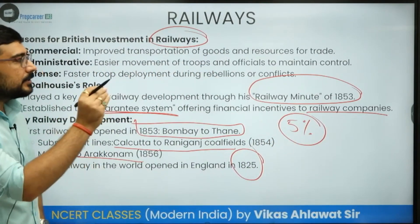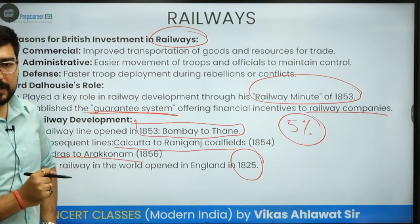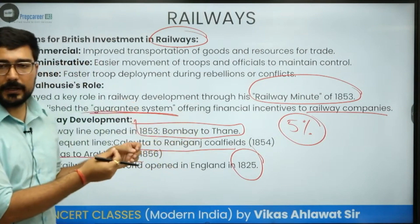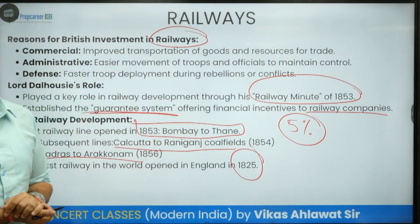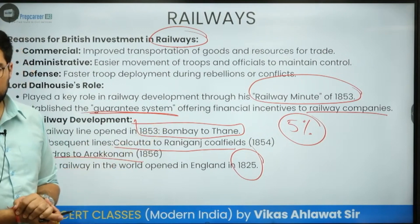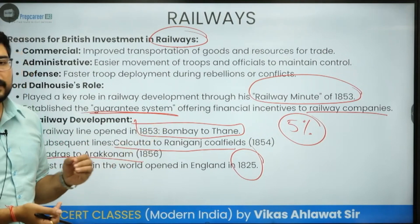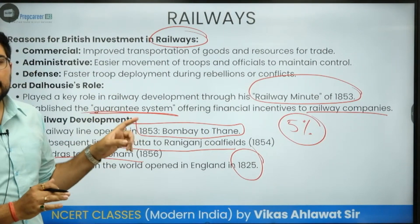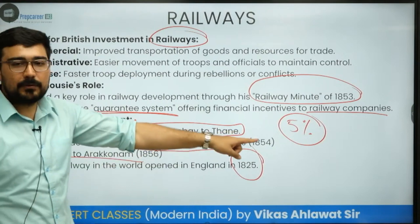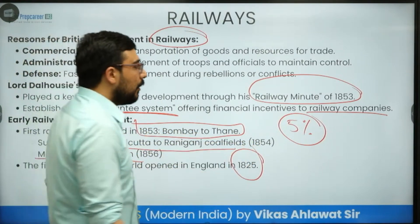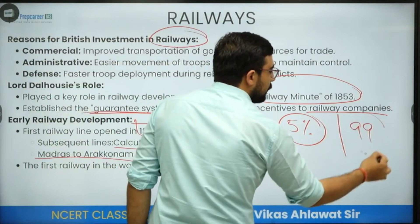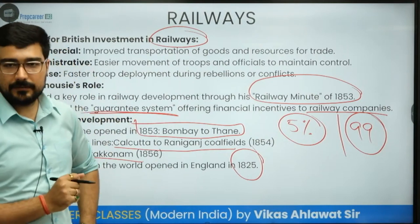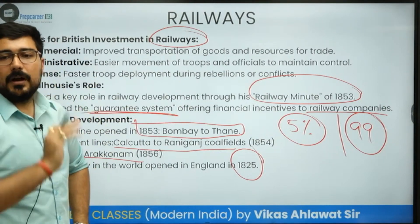Maximum investment in Indian railway construction came from outside, and these investors were given a fixed 5 percent interest rate. This was a financial incentive to railway companies who had excess capital, giving British investors an easy opportunity to invest in Indian railways and get maximum returns. Land required for building railways was given on a 99-year lease, further extendable.